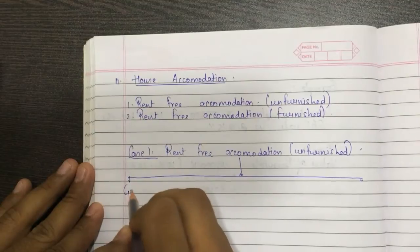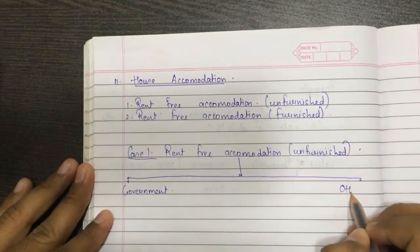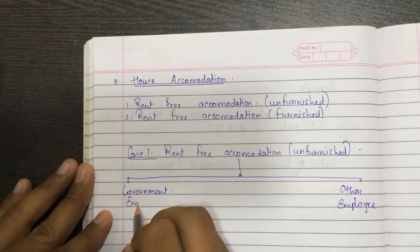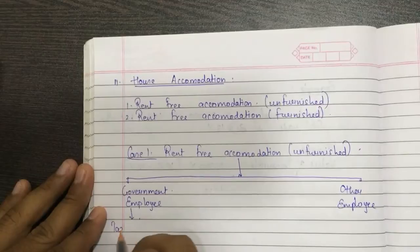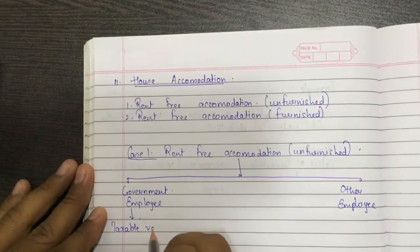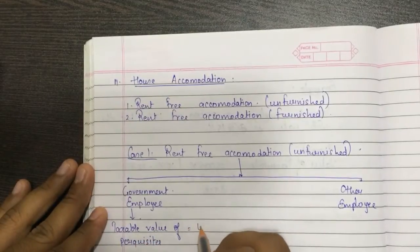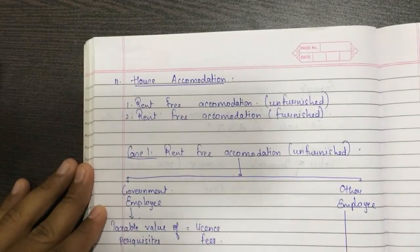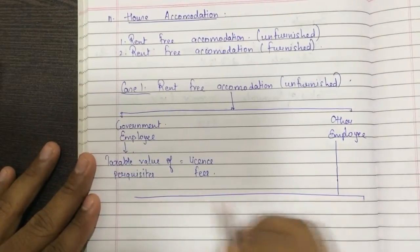So these are the two cases. Let's draw the chart. In case of a government employee and in case of other employees — the taxable value of perquisites for a government employee is equal to the license fee. Then we'll see other employees. Let me complete the chart first and then I'll explain both cases.